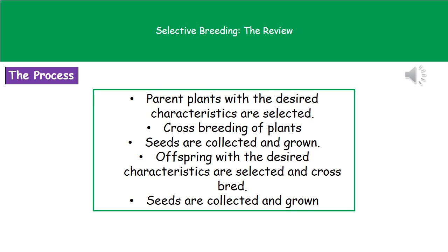The actual process to produce a selectively bred plant starts with our parent plants. We pick the ones that have our desired characteristics, then cross-breed those two plants by transferring the pollen from one to the other, and then we wait until they produce seeds.